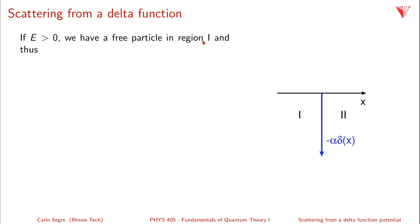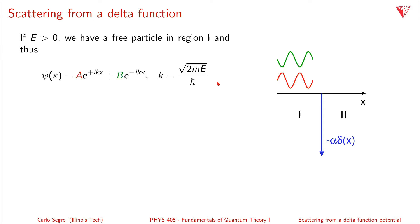Let's proceed with the scattering from a negative delta function where E is greater than zero. In region one, we have a free particle, so psi(x) = A·e^(ikx), which is a traveling wave moving in the positive x direction — ignoring the time component e^(-i·omega·t), so it becomes kx - omega·t. We also have B·e^(-ikx), a traveling wave with the same frequency moving in the opposite direction. Both solve the free particle equation.